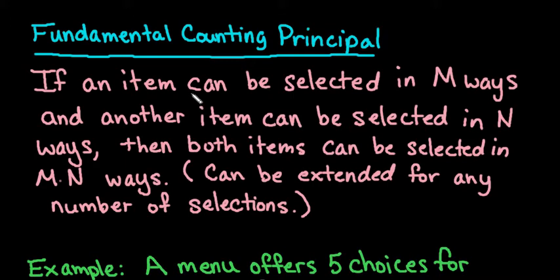Basically what it says is if an item can be selected in M ways, where M represents any number. I know that sometimes with variables it gets confusing. This could be 5, this could be 10, this could be 217, no matter how many ways that it can be selected.